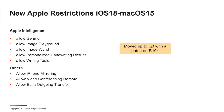We've proactively added all the Apple Intelligence restrictions. Even though Apple Intelligence won't appear until October, we've already made these restrictions available in the console so you can prepare your configurations. Note that Apple Intelligence is only supported on iPhone 15 Pro and above, iPads with M1 chip, and Macs with Apple Silicon. Devices not meeting these requirements will not receive Apple Intelligence features.